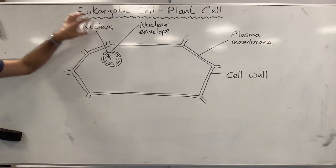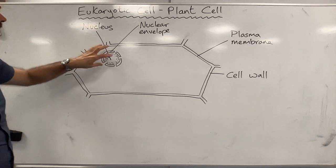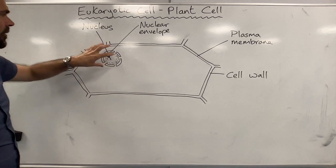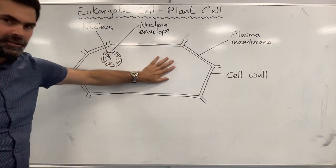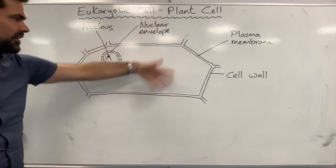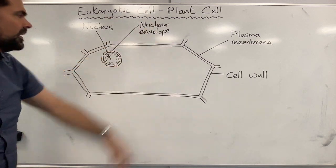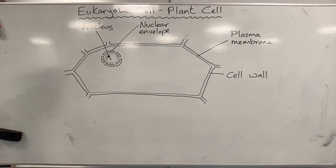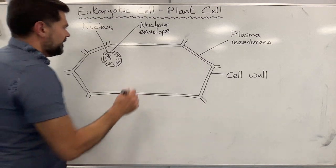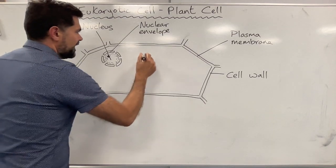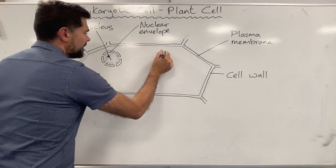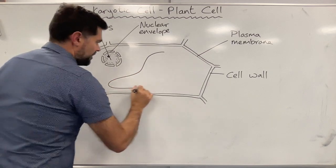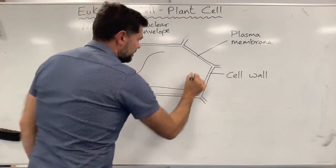The nucleus is where the DNA is kept, and the DNA controls what proteins are produced. The proteins control all the mechanisms happening inside the cell. A large part of a plant cell is often made up of a vacuole.